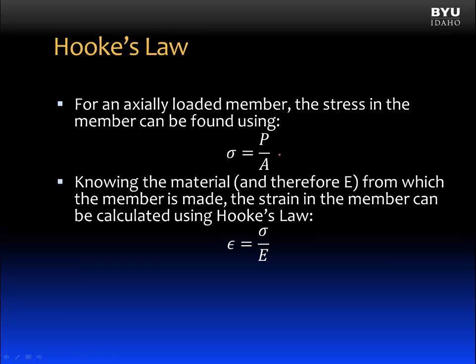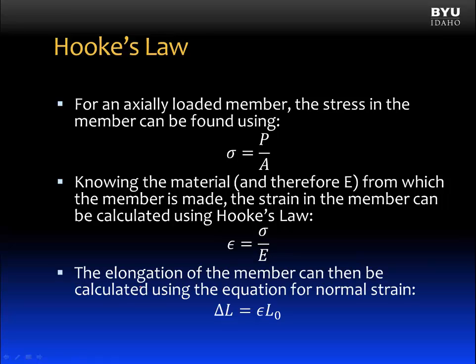Knowing the material properties and therefore E, Young's modulus, from which the member is made, the strain in the member can be calculated using Hooke's Law. Hooke's Law is written to solve for normal strain — that's equal to normal stress divided by E, the modulus of elasticity. Then the elongation of the member can be calculated using the equation for normal strain: the change in length is equal to normal strain times the original length.